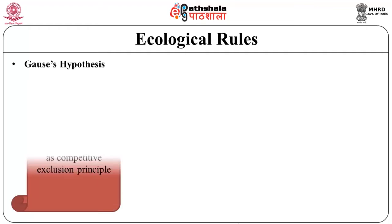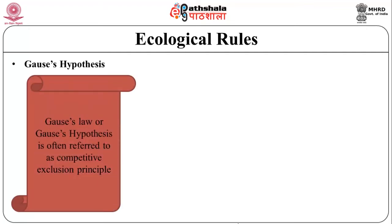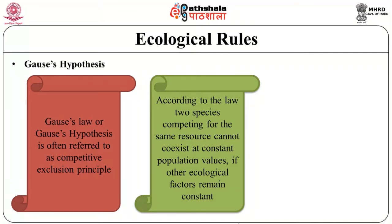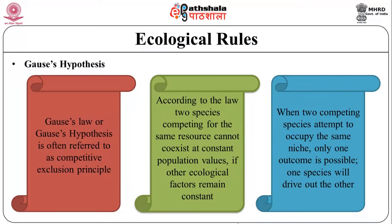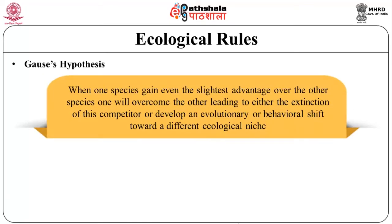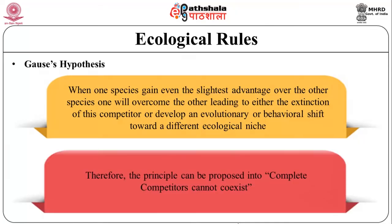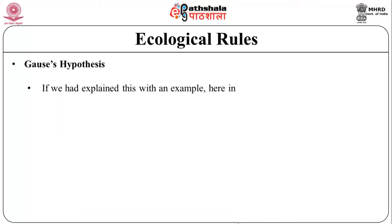The third ecological rule is Gause's Hypothesis, also known as Gause's Law or the competitive exclusion principle. According to this law, two species competing for the same resource cannot coexist at constant population values if other ecological factors remain constant. In simpler terms, when two competing species attempt to occupy the same niche, only one outcome is possible — one species will drive out the other. When one species gains even the slightest advantage, it will overcome the other, leading to either extinction of the competitor or an evolutionary or behavioral shift toward a different ecological niche. Therefore, the principle states: complete competitors cannot coexist.